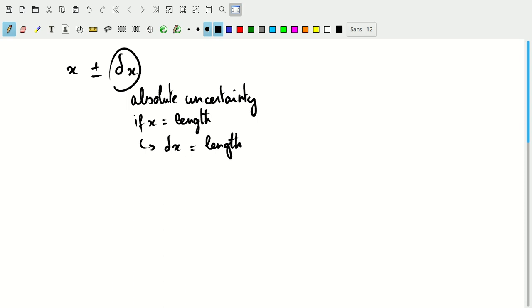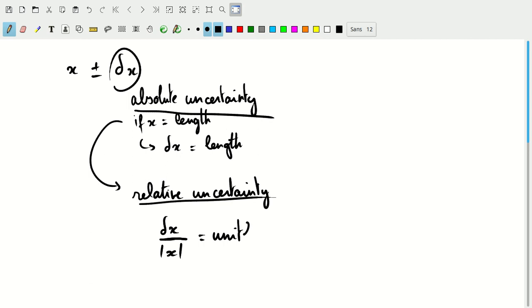Now there's another way we can write this uncertainty. Instead of an absolute uncertainty, we can write a relative uncertainty. The relative uncertainty is dx over the absolute value of x. This is a unitless or dimensionless quantity, and it will often make sense to express it as a percentage. Other ways we term this are fractional uncertainty or even just precision.